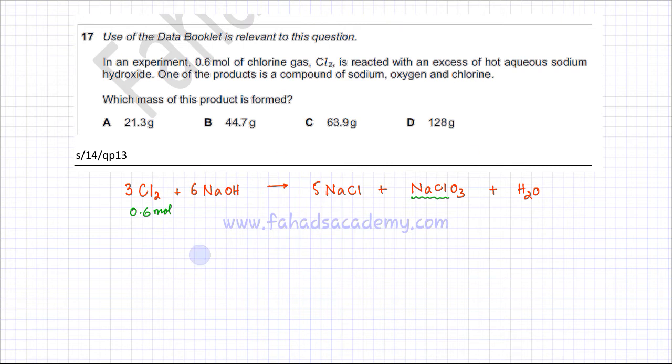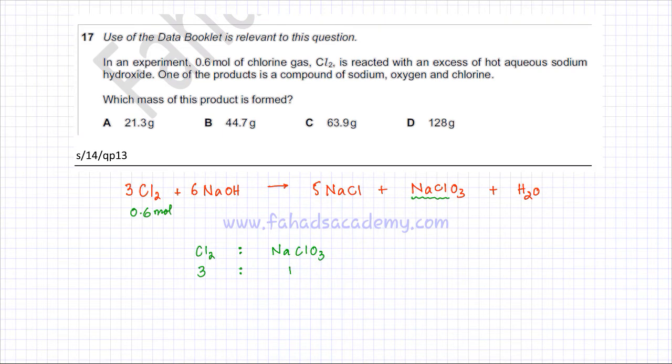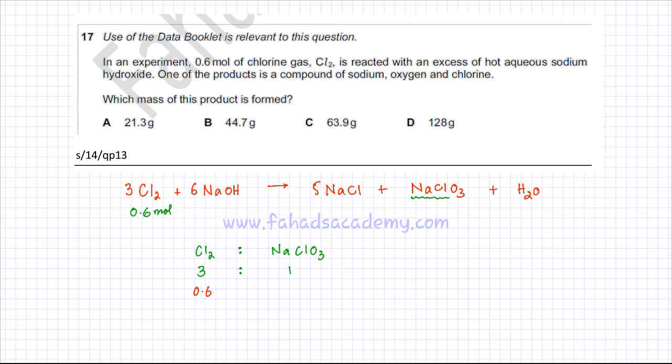The ratio in which chlorine and the product NaClO₃ are reacting and being formed: 3 chlorines produce 1 NaClO₃. We're given 0.6 moles of chlorine. Using the unitary method, using crisscross method, 3x would be equal to 0.6, and x would be equal to 0.2 moles.